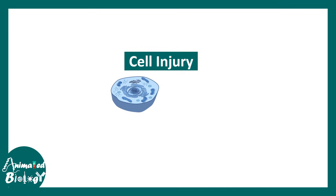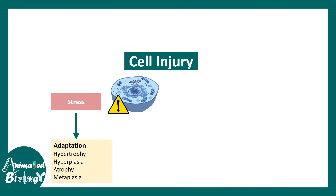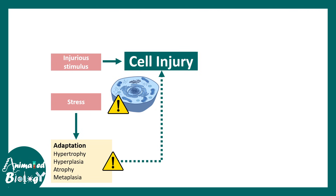Cell injury can be caused due to cellular stress. When a cell experiences stress, it tries to overcome the stress by doing adaptation. There are many methods of adaptation, but imagine a situation when a cell can't adapt to the stress — that leads to cell injury. There could also be an obnoxious stimulus that leads to cell injury.